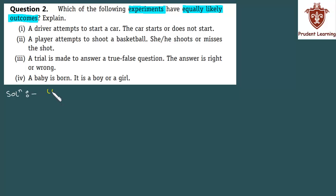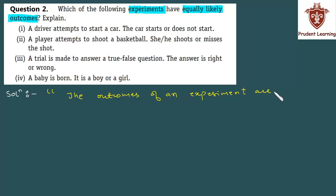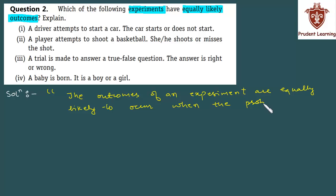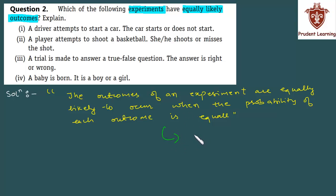मैं definition आपको English में लिख के भी बता जाता हूँ, और एक example भी लूँगा तो ज़्यादा अच्छे से clear हो जाएगा. The probability of each outcome is equal. और example में मैं, let's say, एक fair coin को toss करने का event ले लेता हूँ.